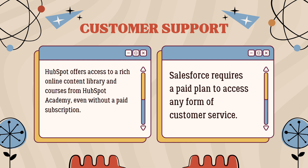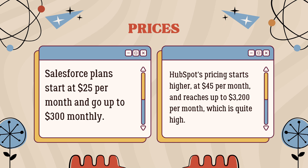When you look at the prices, both CRM options offer different paid plans that suit various types of businesses. Salesforce plans start at $25 per month and go up to $300 monthly. HubSpot's pricing starts higher at $45 per month and reaches up to $3,200 per month, which is quite high. However, HubSpot also offers a free version. So the decision isn't just about cost — it is about choosing the plan that fits your business best.